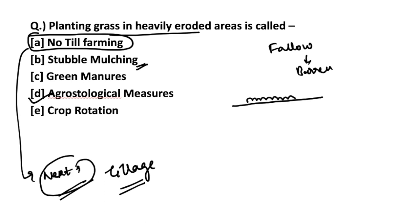Another method is green manures — crops other than food crops can be grown on the soil to keep the fertility of the farmland intact. The next method is crop rotation, where crops such as turnips or radishes can be used in order to blanket the soil all year.